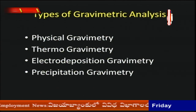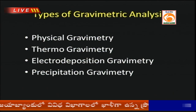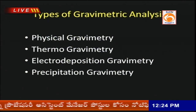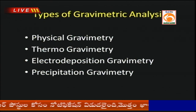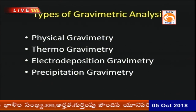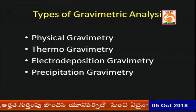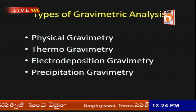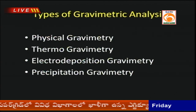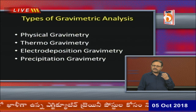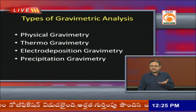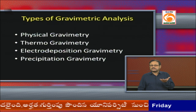Different types of gravimetric analysis methods are available: physical gravimetric, thermogravimetric, electrodeposition gravimetric, and precipitation gravimetric. Of all these, we are going to discuss precipitation gravimetric. In higher classes, you will come across TGA — thermogravimetric analysis — which is highly useful for knowing the exact quantity of substance present in a sample.